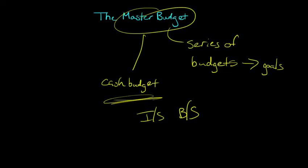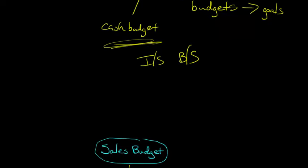When we think about putting together this master budget — this series of interrelated budgets — it's all going to start with coming up with a sales budget. The sales budget is the most foundational budget we're going to make, because without it, we're not going to be able to make a lot of the other budgets.